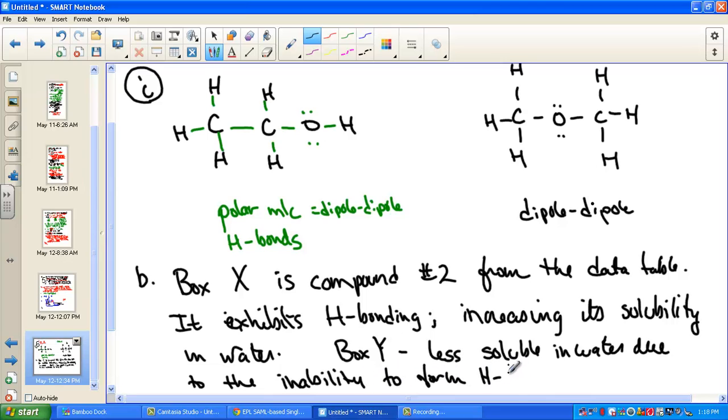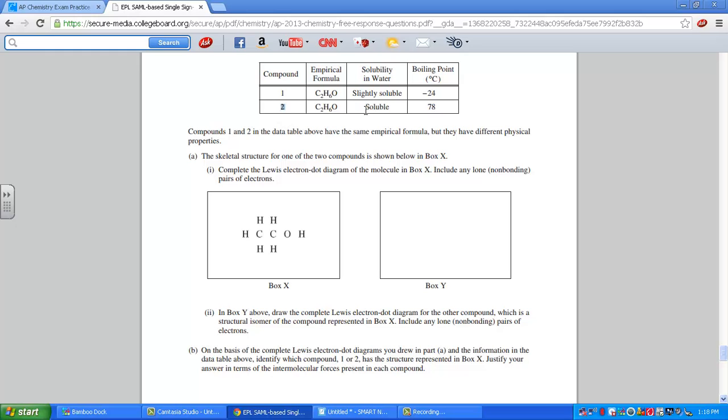The box X is compound 2. Just to kind of clarify, compound 2 we said was very soluble. This has the hydrogen bonding ability. So compound 2 we drew in box X, increased solubility due to the hydrogen bonding. Very key to say that. Box Y must be the first compound. It's less soluble in water, much lower boiling point, telling us it has weaker intermolecular attractions. The inability to form hydrogen bonding would explain why compound 1 is what we drew in the second box.